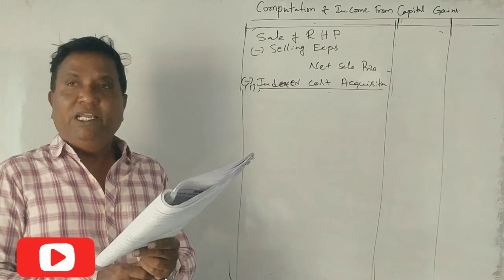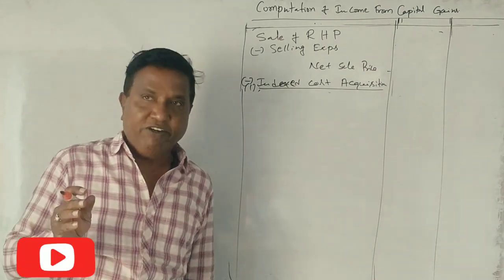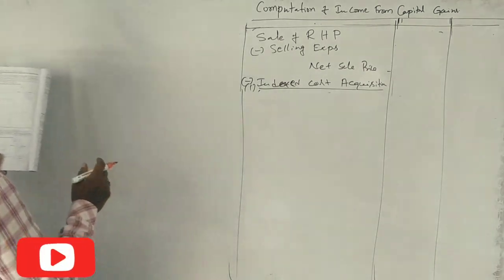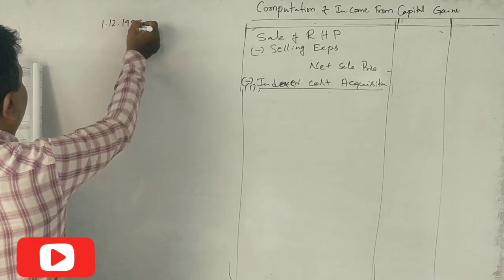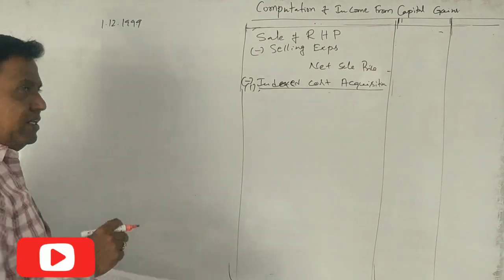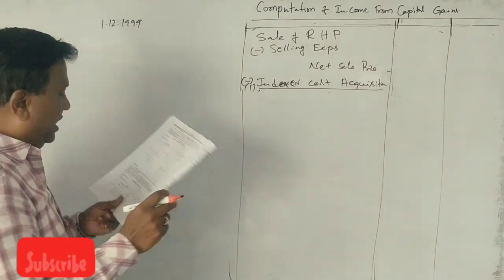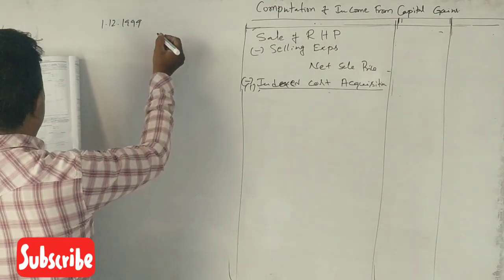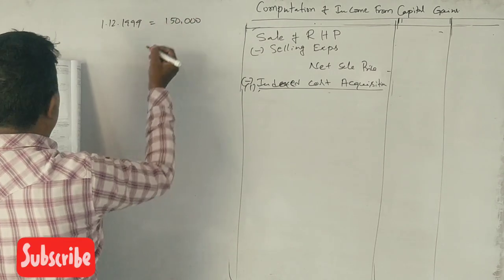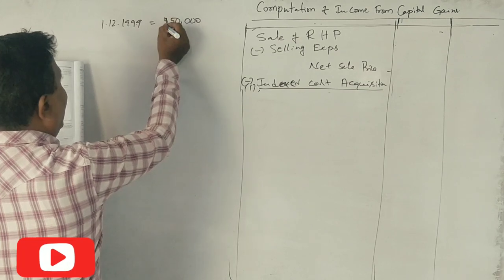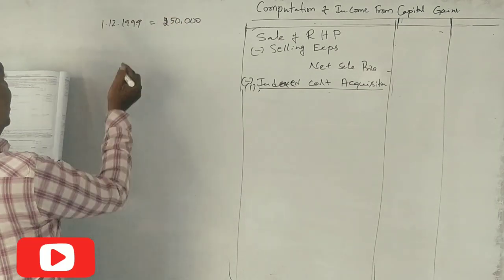So let's see what we need to do here. The purchase was made on 1st of December 1999. We have index for 1999. The purchase was made for Rs. 2,50,000. But there's also fair market value on 1-4-2001.